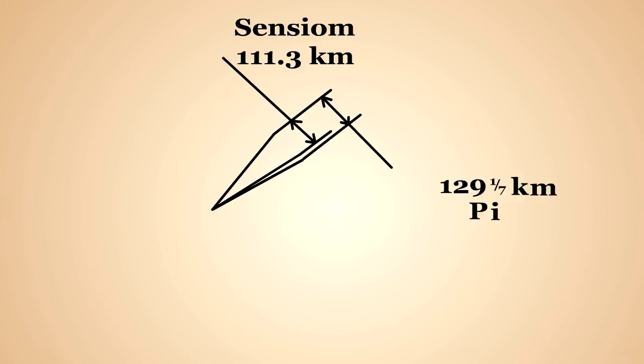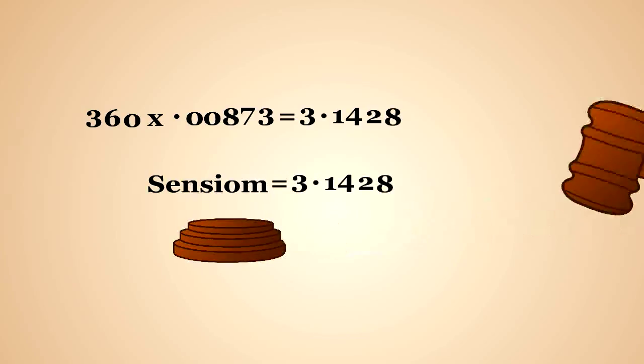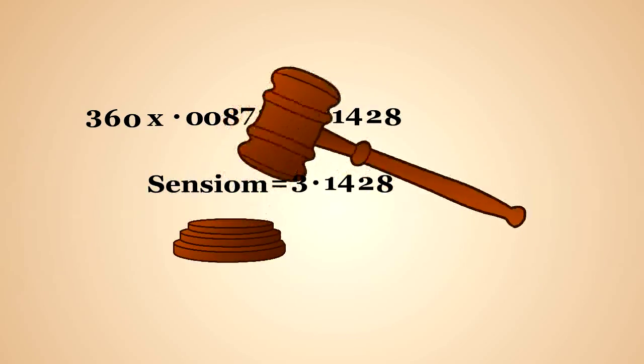Our standard circle with three hundred and sixty lines multiplied by their length of point zero zero eight seven three produces a circumference of three point one four two eight exactly. Divide this by our diameter of one and nothing changes. So our new constant centium would equal three point one four two eight exactly, and that could be our standard centium for all circles.